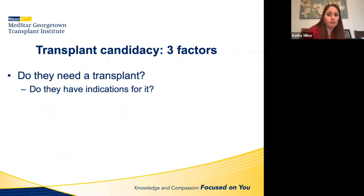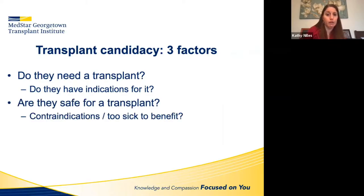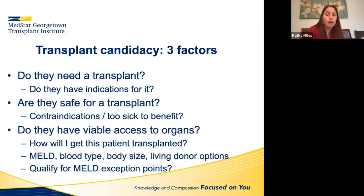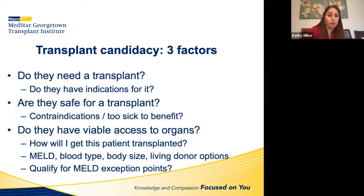Three factors I think about when I see a patient in clinic with cirrhosis: Do they need a transplant — do they have indications? Are they safe for transplant — do they have contraindications or are they too sick to benefit? And do they have viable access to organs — based on their MELD, blood type, body size, living donor options, and whether they qualify for MELD exception points?